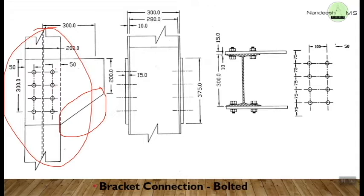This is the front elevation where you can see the column and on top of it you have the bracket plate, and the bolt holes are seen here. When you are seeing from this end, just the bolt holes can be represented with only circles, along with the dimensions of the pitch and the edge distances. Whereas when you come to the side view or the top view, you will have to show the bolt as well as the nut and the threading shaft.